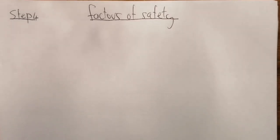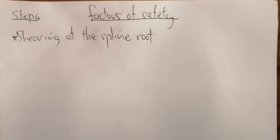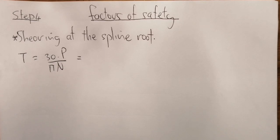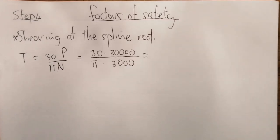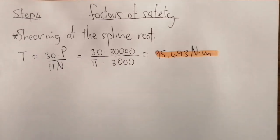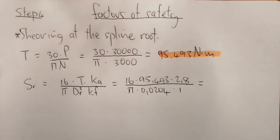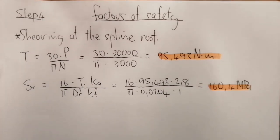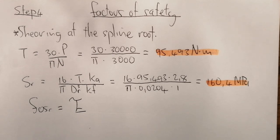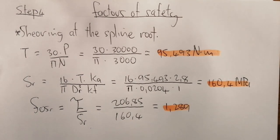Step 4 — Factors of safety. Shearing at the spline root: first calculating the torque as 30 times power over pi times speed, equal to 95.493 Nm. The shear stress at the spline root is 16 times torque times KA divided by pi times root diameter cubed, times KF, which equals 16.64 MPa. The factor of safety for shearing at the spline root is allowable shear divided by calculated shear, equal to 1.289.